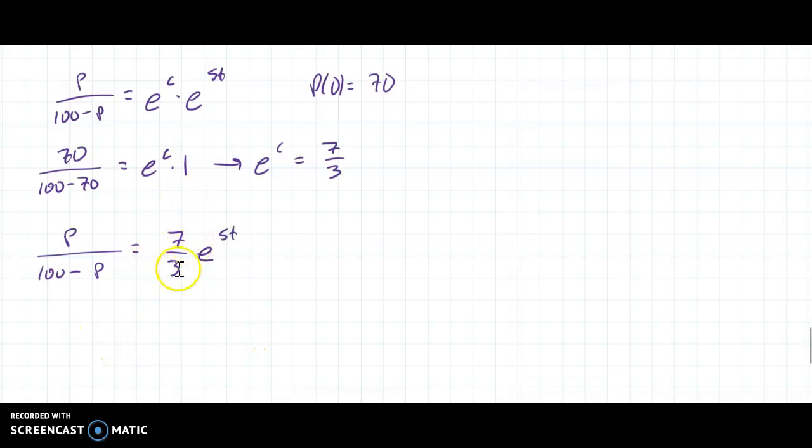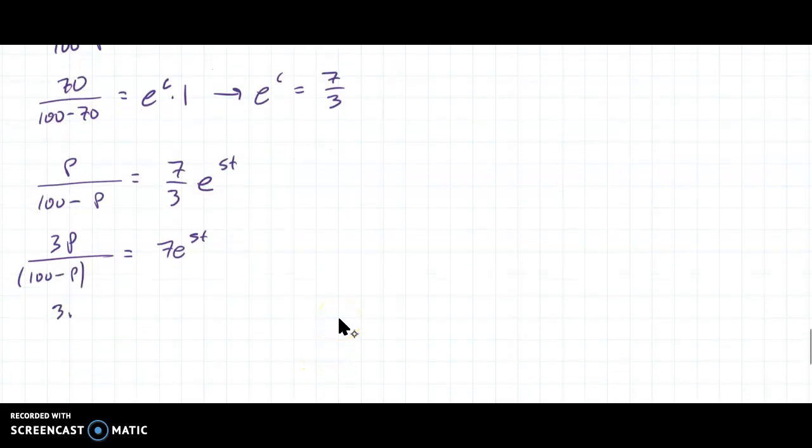All right. So from here, what I get is P/(100 - P) = 7/3 times e^(5t). Now, I want to get rid of this fraction here as soon as possible. So we are going to multiply over onto this side, but I'm going to leave the 7 there. So that gives me 3P/(100 - P) = 7e^(5t). And now I can multiply by this on both sides. So that gives me 3P = (100 - P) times 7e^(5t).